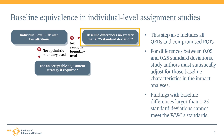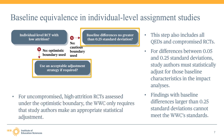Now let's talk about the bottom path. Some RCTs only need to apply a statistical adjustment for baseline differences to satisfy the baseline equivalence standard. For individual-level RCTs, this option is acceptable for uncompromised RCTs with high attrition assessed under the optimistic attrition boundary. These types of RCTs only need to statistically adjust for key covariates in order to satisfy the baseline equivalence standard. We describe appropriate adjustment strategies later in this module.